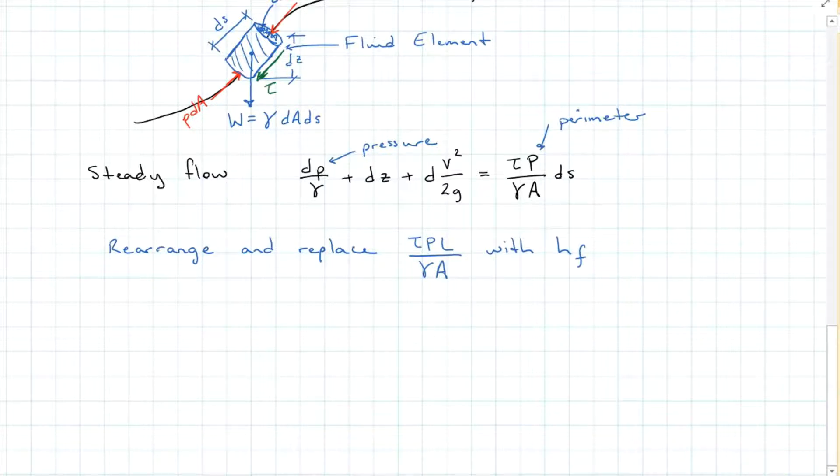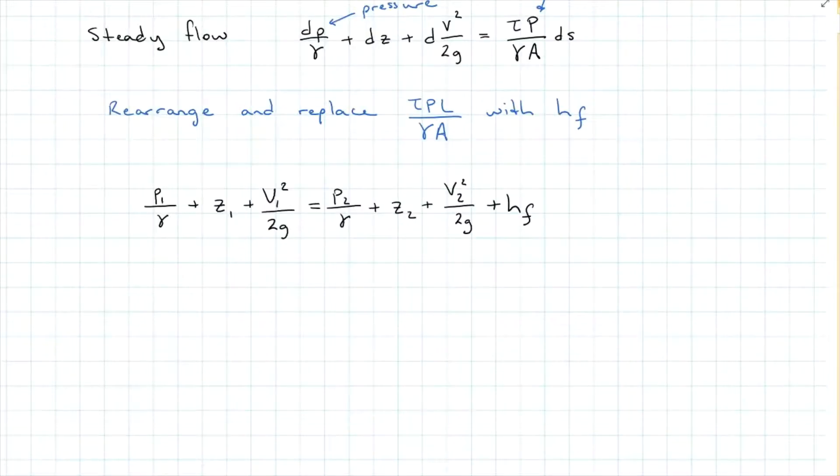We're going to come up with Bernoulli's equation, which is pressure 1 over the specific weight plus the initial elevation plus the initial velocity squared over 2g is equal to the outgoing pressure over the specific weight plus the outgoing elevation, the exiting velocity squared over 2g, and then HF, which we're going to call the wall friction head loss.